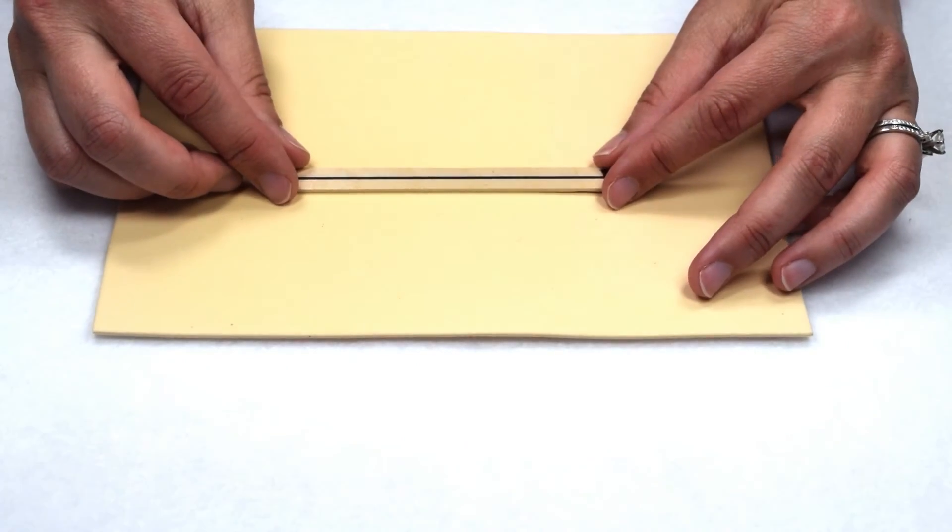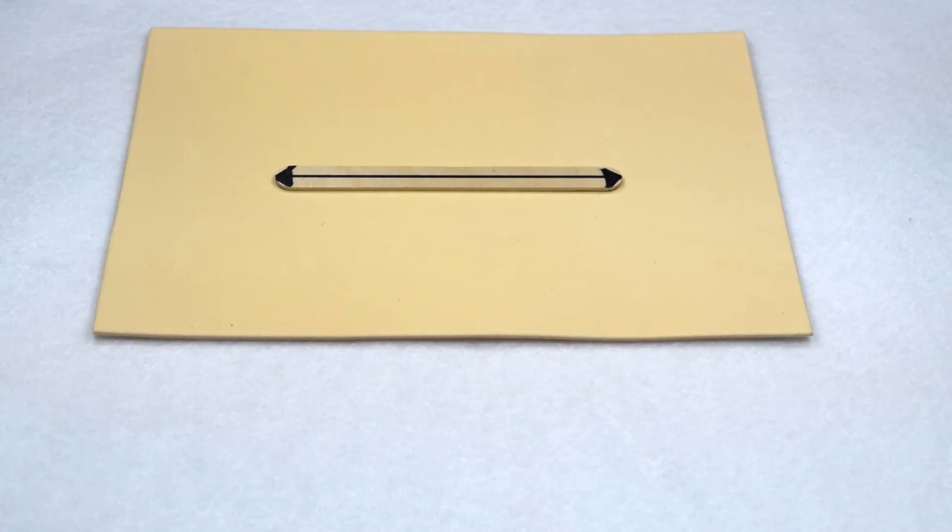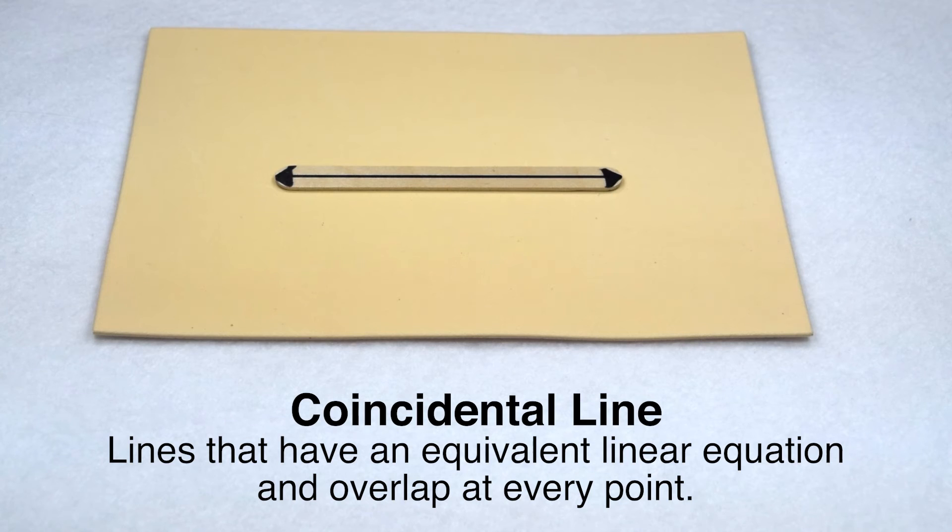If that cuts across two lines, what happens to lines that intersect at all their points? Those would be called coincidental lines. Coincidental lines are lines that have equivalent linear relationships and overlap at every point. Without being able to see the equation though, they simply look like a single line.